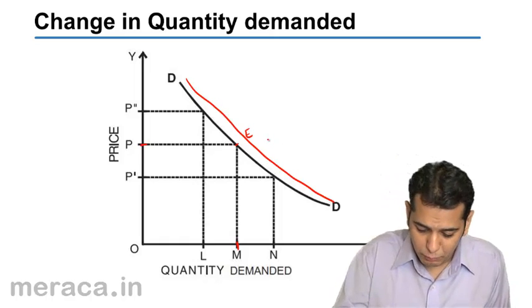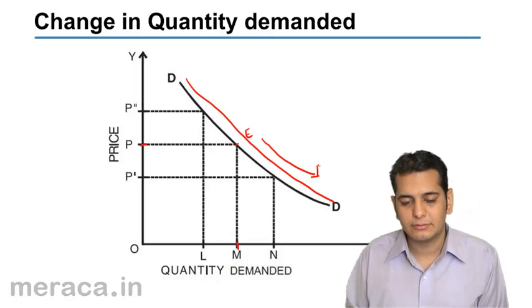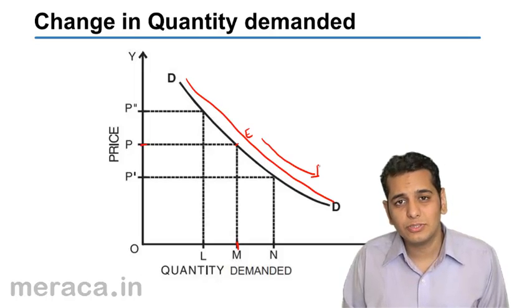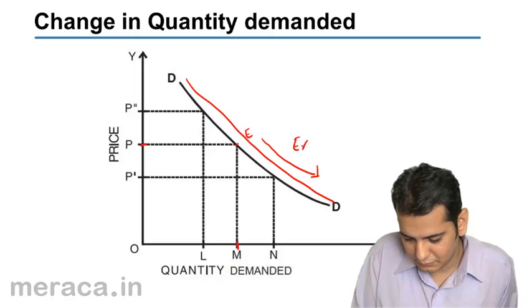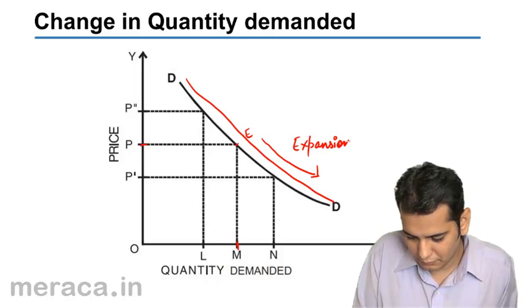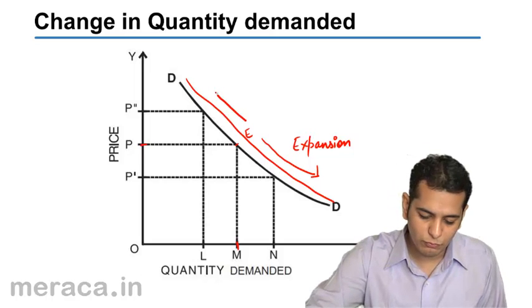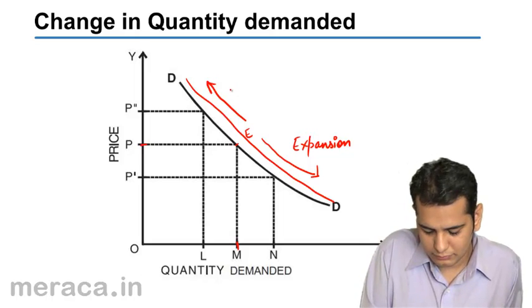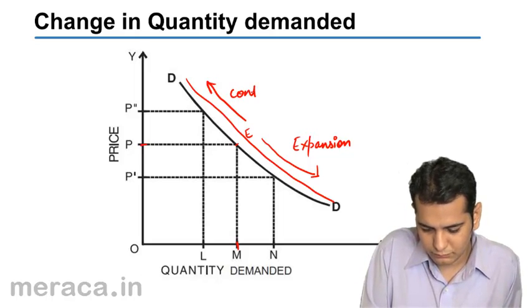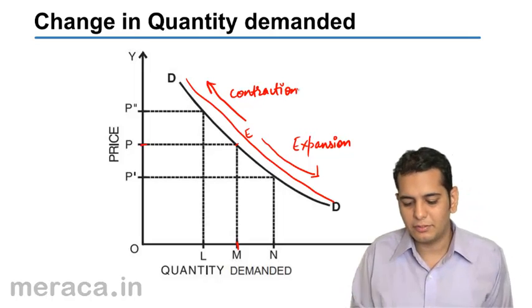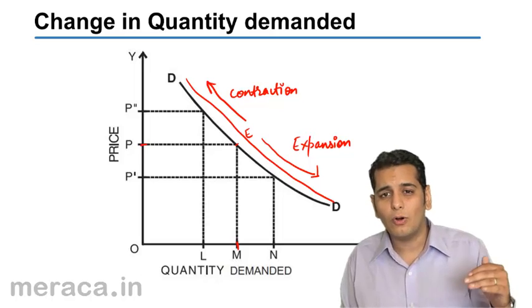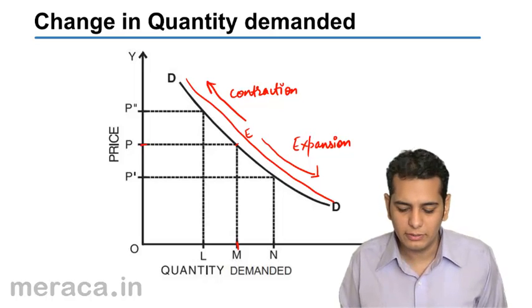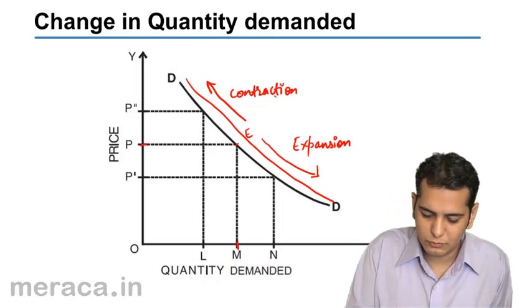Now, if we move towards the right, we call it expansion in demand. However, if we move towards the left, we call it contraction in demand. The downward or rightward movement is called expansion. The upward or leftward movement is called contraction.